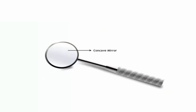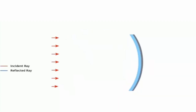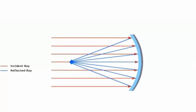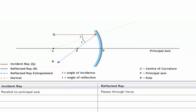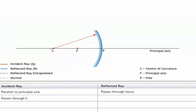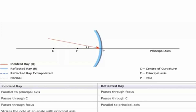You will be familiar with the dentist mirror — he uses it to see an enlarged image of the teeth. This is an example of a concave mirror. When parallel light falls on a concave mirror, it converges, that's why it's called a converging mirror. The same four rules apply: a ray parallel to the principal axis passes through the focus; a ray through the center of curvature retraces its path; a ray through the focus reflects parallel to the principal axis; and the angle of reflection equals the angle of incidence.